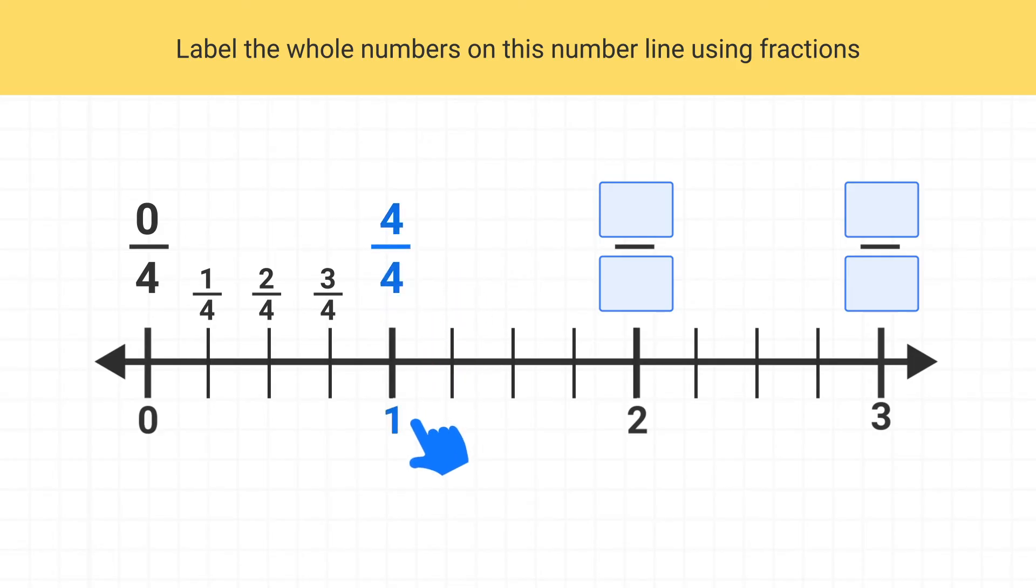Now continue this pattern. What is 2 wholes equal to? If you keep going, we have 5 fourths, 6 fourths, 7 fourths, and 8 fourths. 2 wholes is equal to 8 fourths.